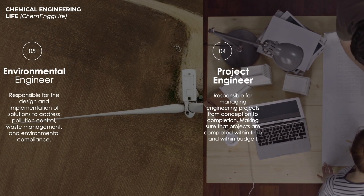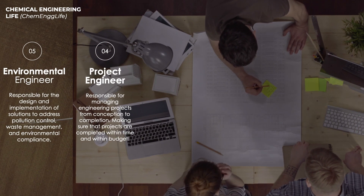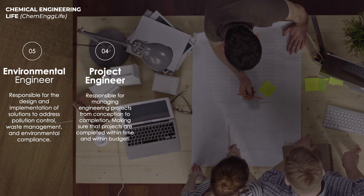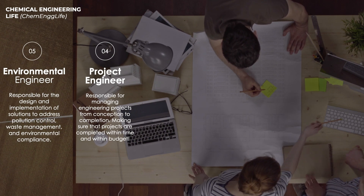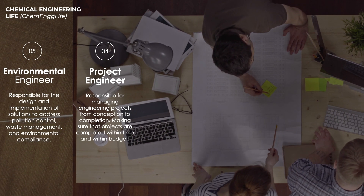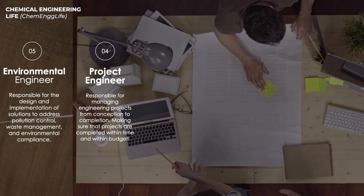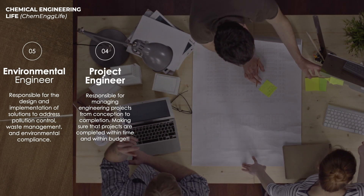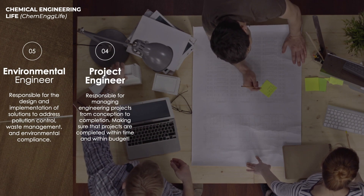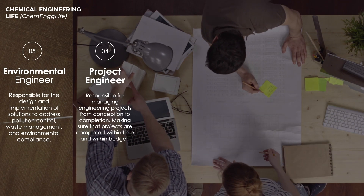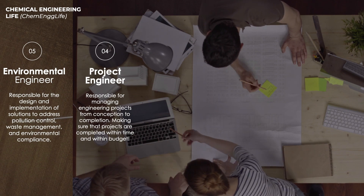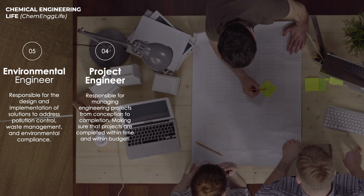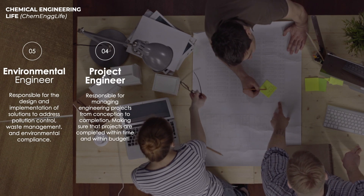The job title at number 4 is Project Engineer. Project engineers are the professionals responsible for managing every tiny detail of engineering projects from conception to completion. They are responsible for planning, scheduling, predicting, budgeting, and managing all the technical tasks of their project. They are of utmost importance to any company because they are the ones that make sure that the projects are finished within the timeline and within the budget.